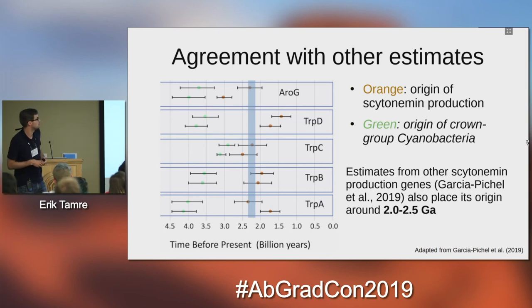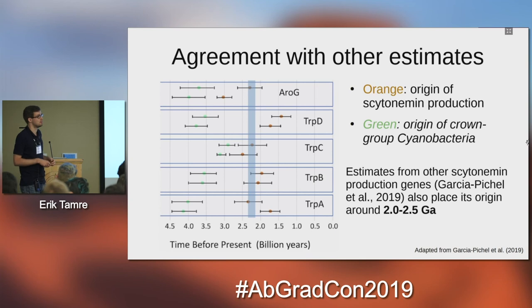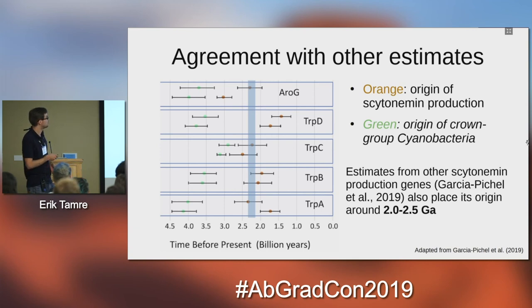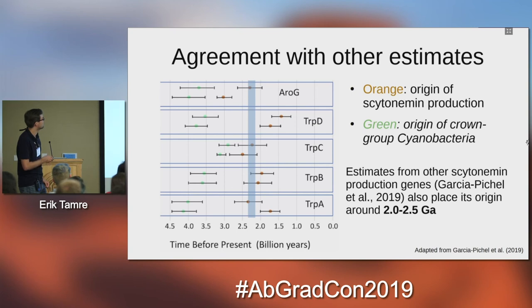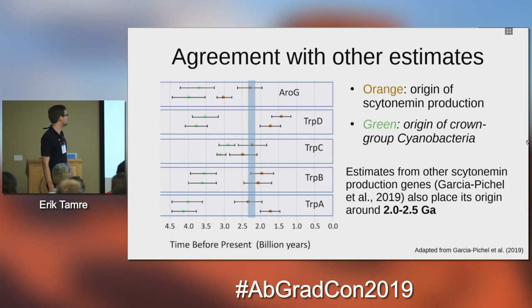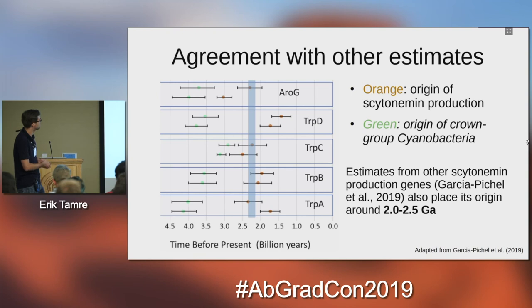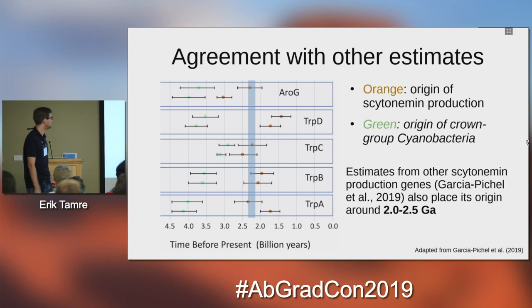Very recently — about two months ago — another paper from Arizona State University also made an effort to date cyanobacterial production of scytonemin. They used a different set of genes, specifically the genes responsible for producing precursors to scytonemin biosynthesis. They made separate molecular clocks for each of these genes, and while there is quite a bit of variability, the placement is generally somewhere just above two billion years ago. I've marked the GOE here in blue.